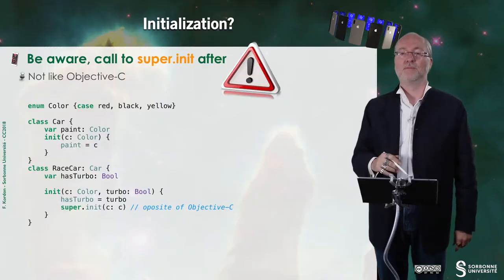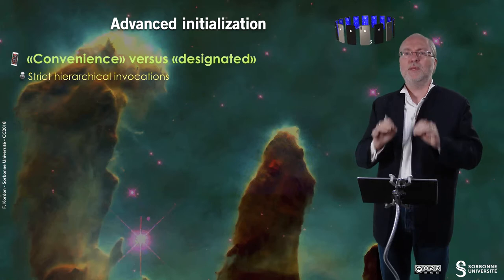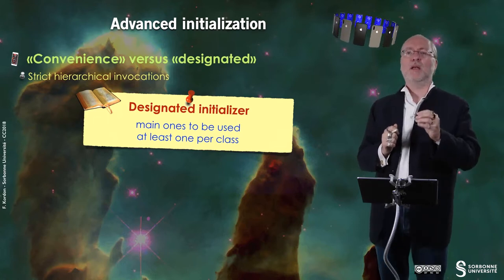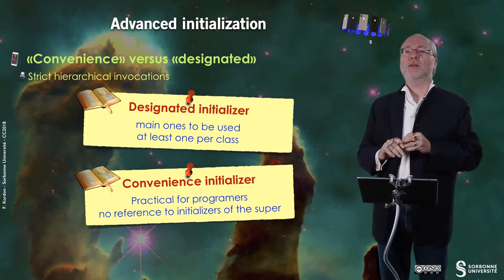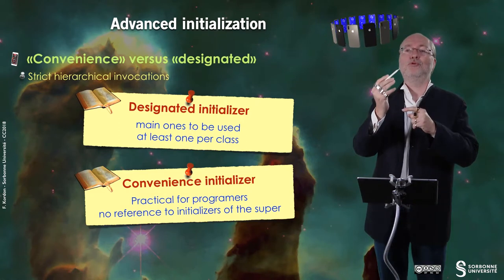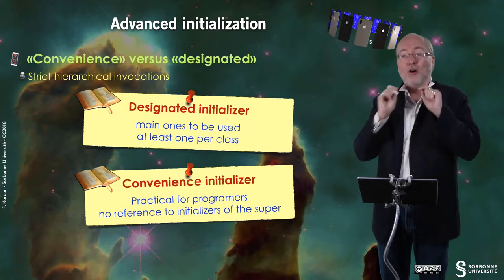In fact, when you consider initialization, you have designated initializer and convenience initializer. And this introduces some hierarchical invocation mechanisms that must be strictly respected. A designated initializer is the main one to be used. In fact, are the main ones to be used because you must have at least one per class, but you may have several designated initializers. And convenience initializers are practical for programmers. And in fact, the difference between a convenience initializer and a designated initializer is that the designated initializer makes the reference to super, while the convenience initializer only invokes another initializer, convenience or designated, of the current class.